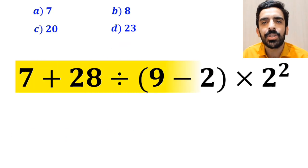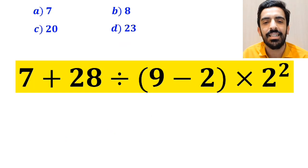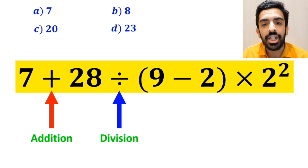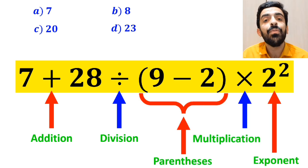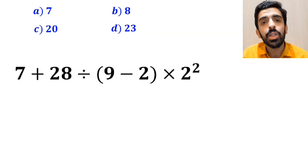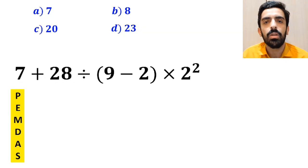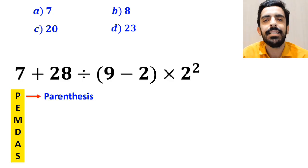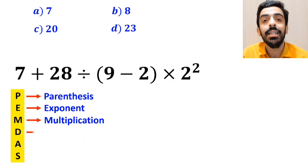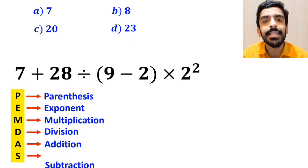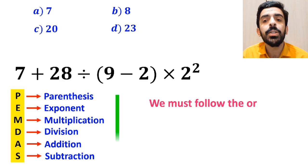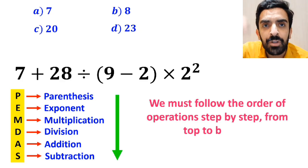Now let me show you how to solve this expression correctly. As you can see in the image, this expression has an addition sign, then a division sign, followed by parenthesis, then a multiplication, and finally an exponent. To solve this problem, we must follow the PEMDAS rule: P for parenthesis, E for exponent, M for multiplication, D for division, A for addition, and S for subtraction. We must follow the order of operations step by step from top to bottom.